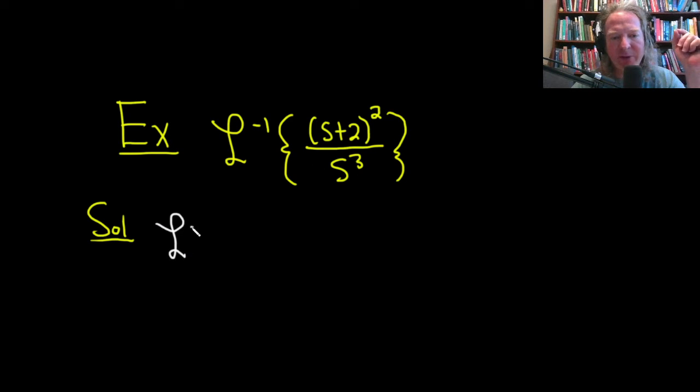So we have the inverse Laplace transform of, and there's a formula we can use to expand the s plus 2 squared. Basically, you square the first one, so s squared. You multiply these two and you double it, so 2s times 2 is 4s. And then you square the last one, so 4.